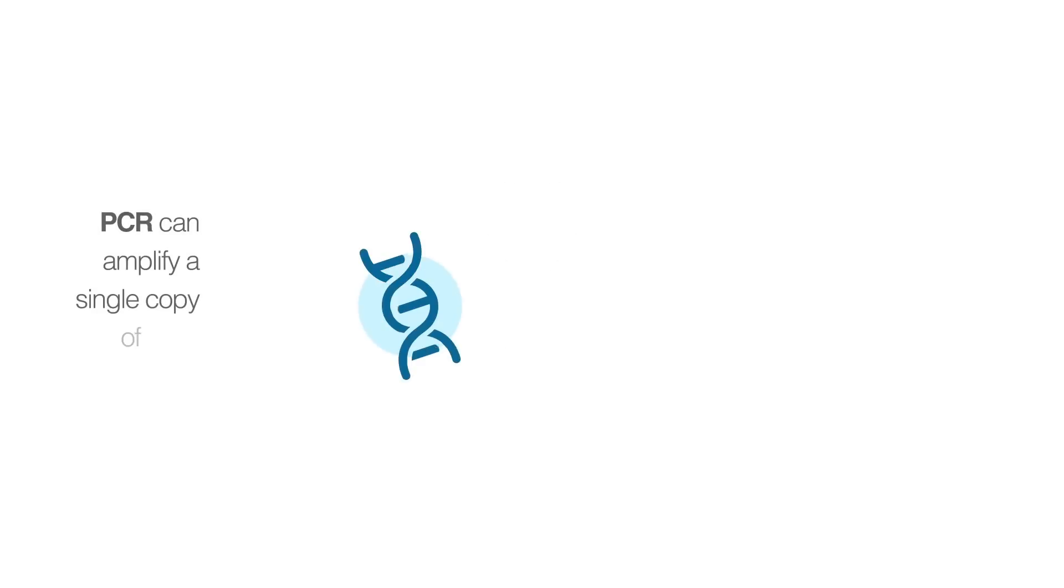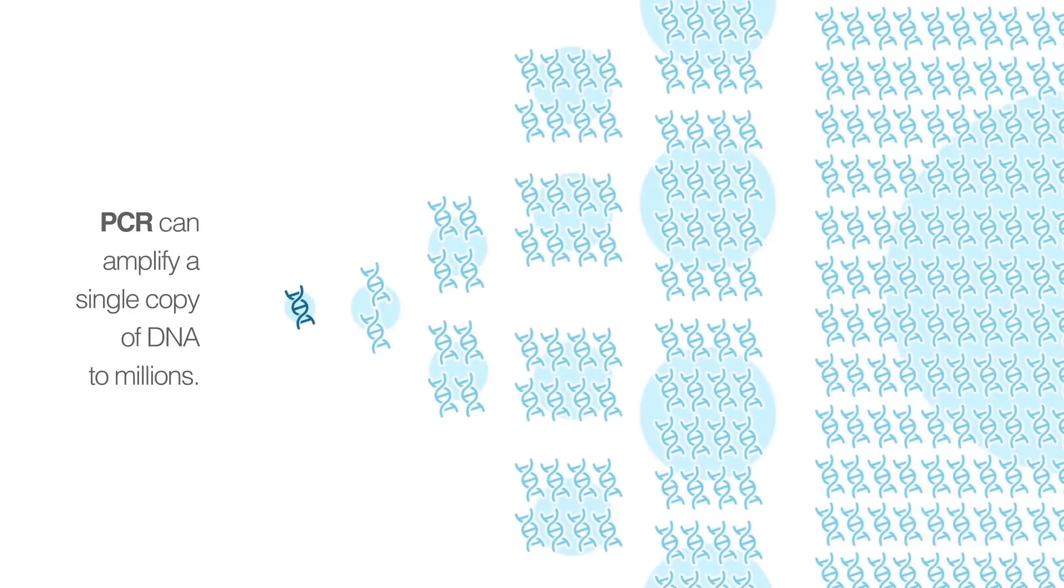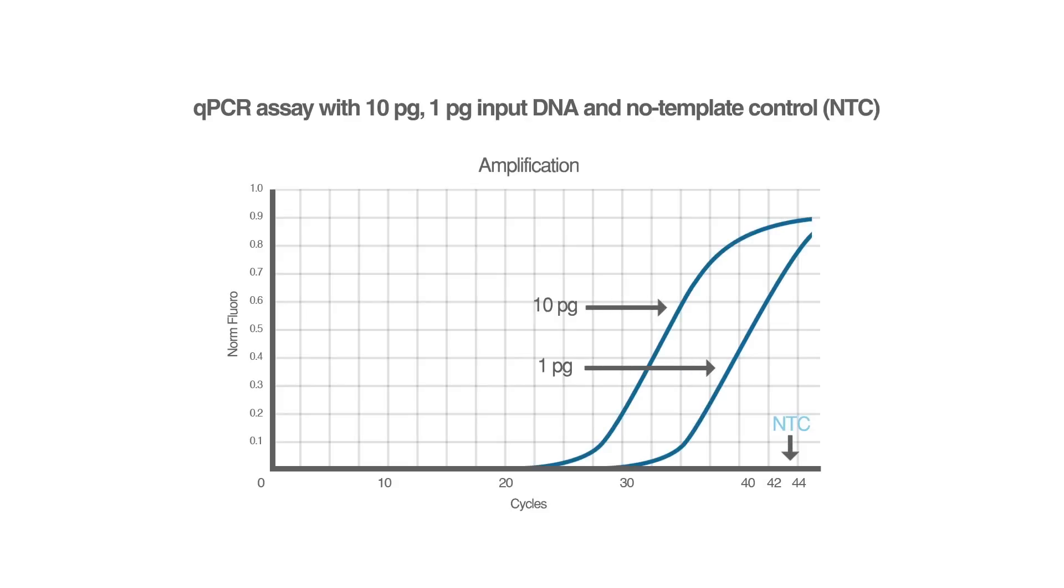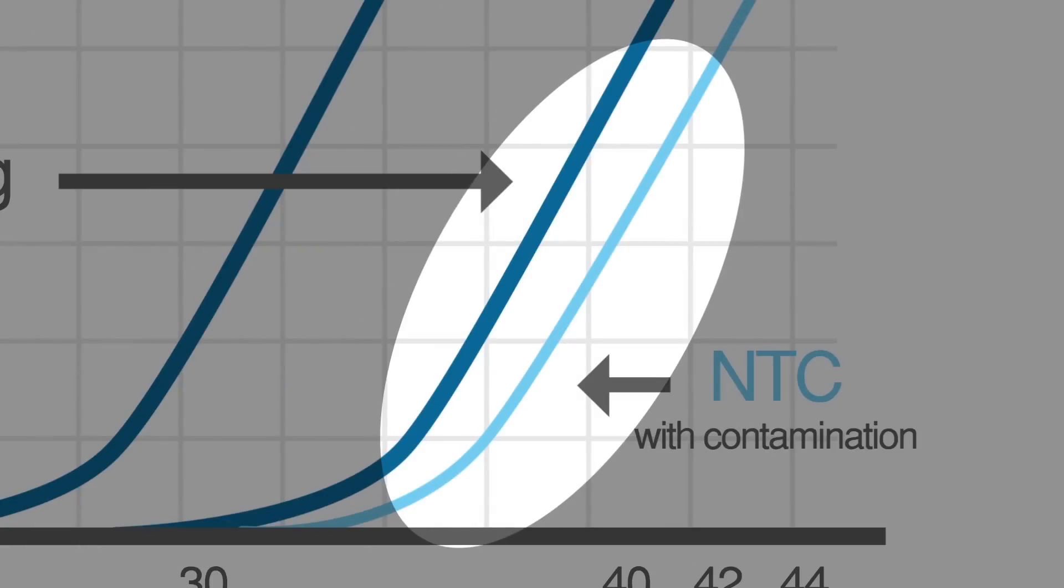PCR is a powerful and sensitive technique that can amplify a single copy of DNA to millions. Therefore, contamination of PCR reagents with any minute amount of DNA can create false positive results and background signals, leading to variability and uncertainty in the data.